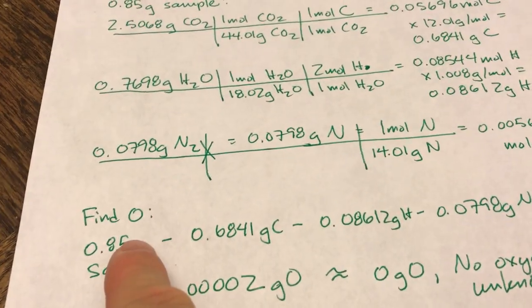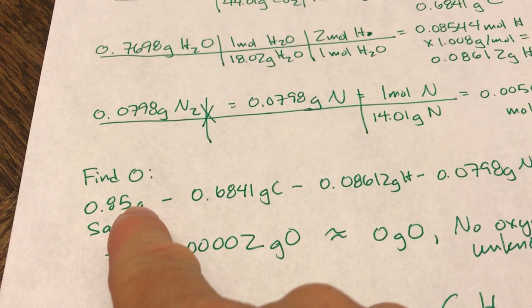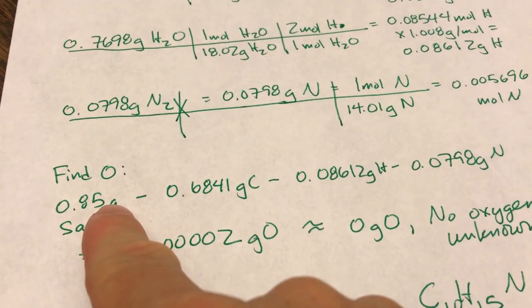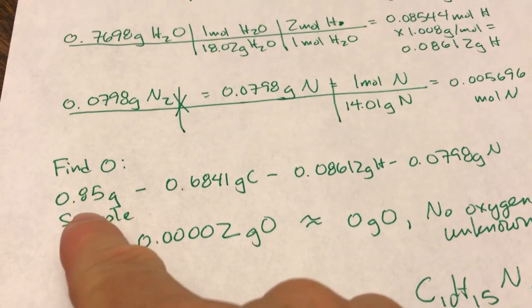And then I needed to find the oxygen in my sample, because there are four elements: carbon, hydrogen, nitrogen, and oxygen. When I did that,